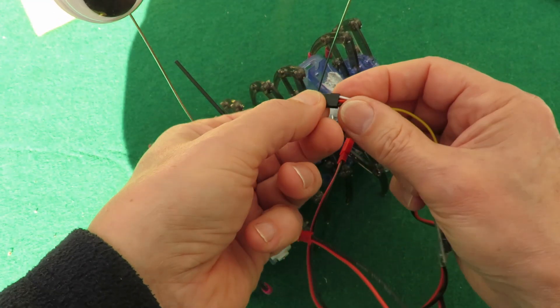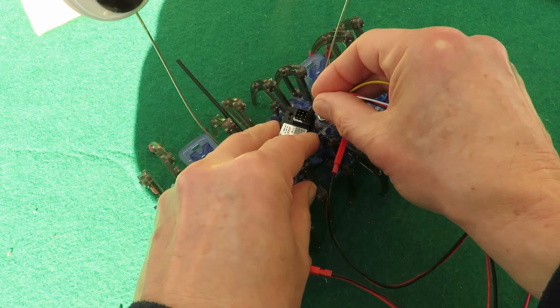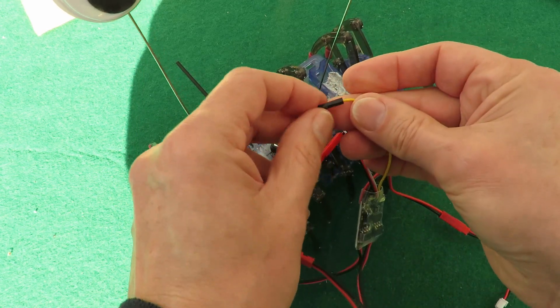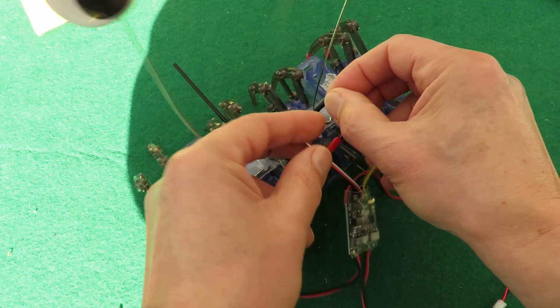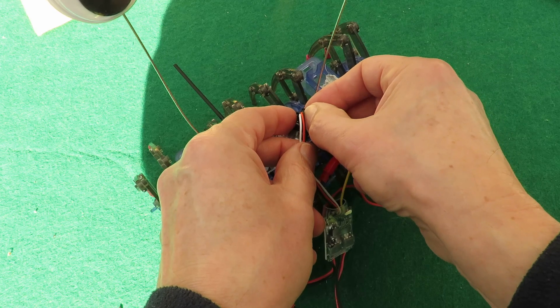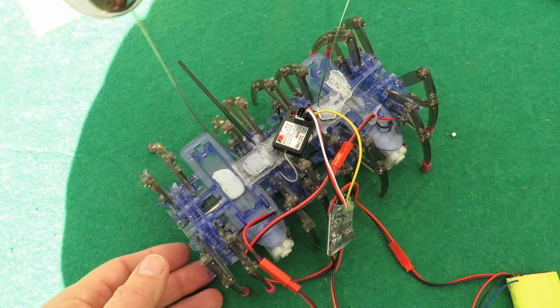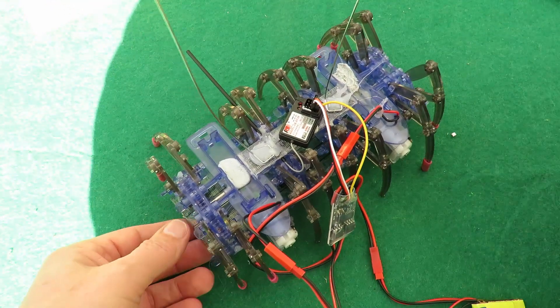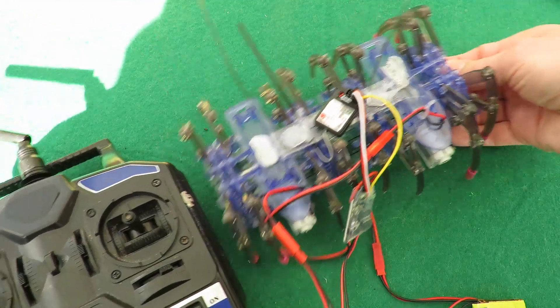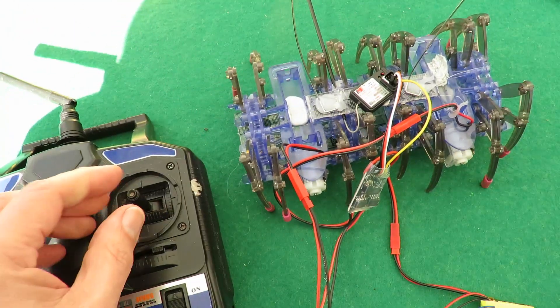Then that goes in the motor position, which happens to be the second one. And that goes in the servo position. Okay. We've got enough noise. Position this so we can actually see.